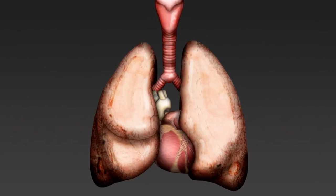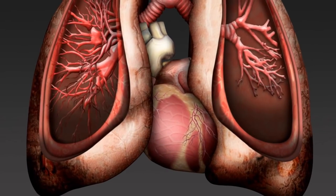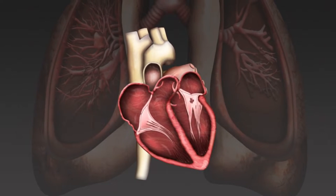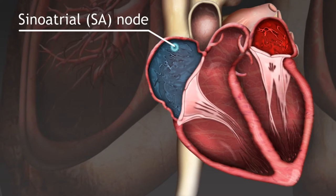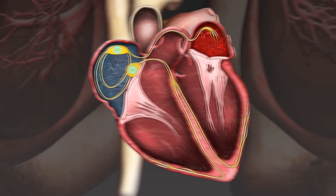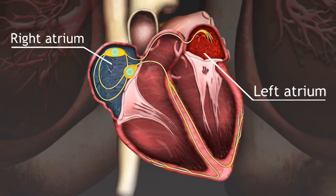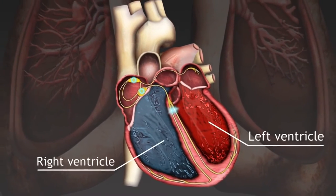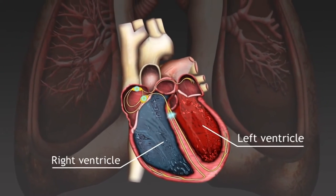Let's start the video with electrical activity of the heart and PQRS complex. The electrical signal starts in a group of cells at the top of your heart called the sinoatrial, or SA node. The signal then travels down through your heart, triggering first your two atria and then your two ventricles. In a healthy heart, the signal travels very quickly, allowing the chambers to contract in a smooth, orderly fashion.